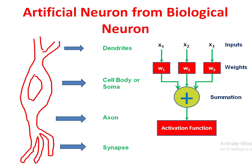That processed value is passed through an activation function and then the output will come. Once summation is completed, the value is called vk, which equals x1·w1 + x2·w2 + x3·w3. That value is passed through the activation function, and finally the output yk equals φ(vk), where φ is the activation function. This is the main analogy from biological neuron to artificial neuron, and yk is the output.